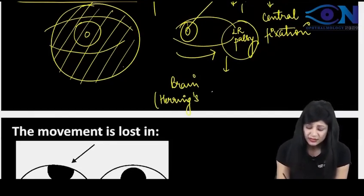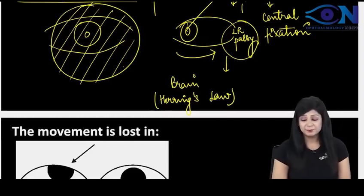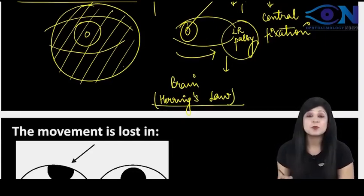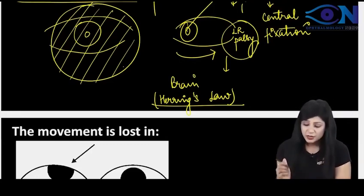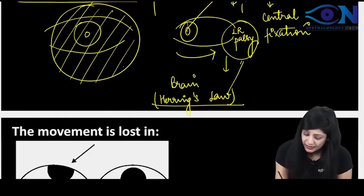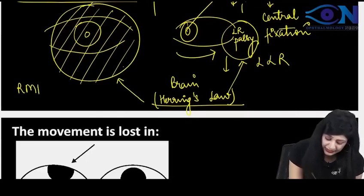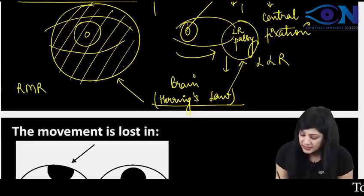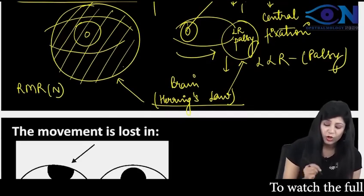Like it is just like parents. Parents says that see, if one child is asking for something, I have to give to both. So Herring's law says that equivalent simultaneous energy has to be given to the yoke muscles. So if I am giving the energy to the left lateral rectus, I have to give the energy to the right medial rectus also.